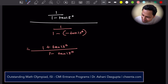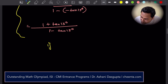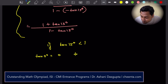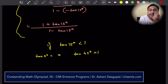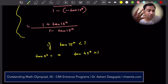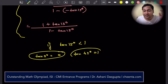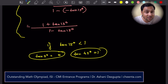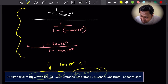One last thing: all of this works only if tan 15 degrees is less than 1. Well, it is — because tan 0 is 0 and tan 45 degrees is 1, and tan increases from 0 to 45 degrees since sine increases and cosine decreases in the first quadrant. So between 0 and 45 degrees, tan is always between 0 and 1, fitting our requirement that the common ratio be between minus 1 and plus 1.